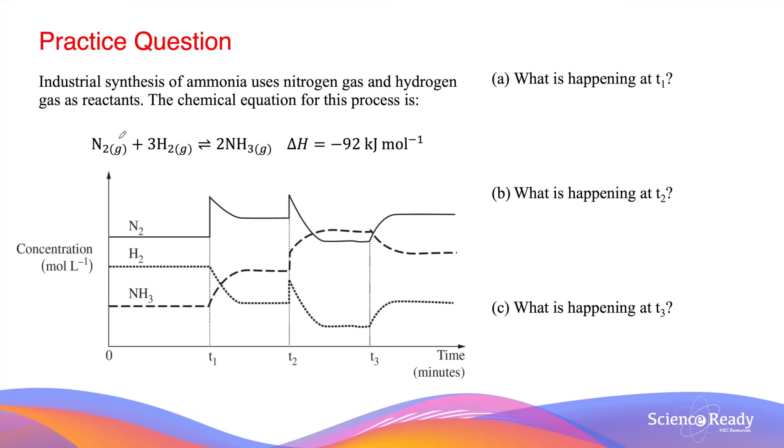So in this case, if the pressure of the system increases, the equilibrium will shift towards the right side as there are less moles of gas, two, versus four moles of gas on the left-hand side.